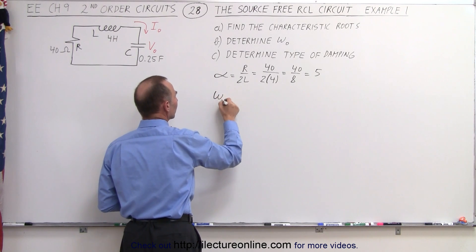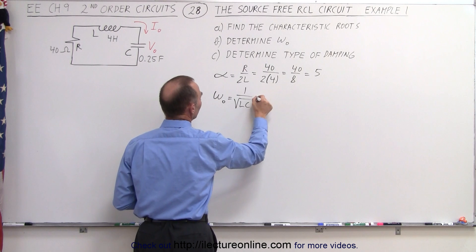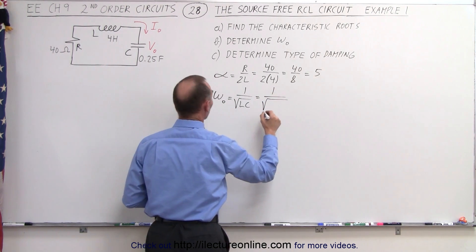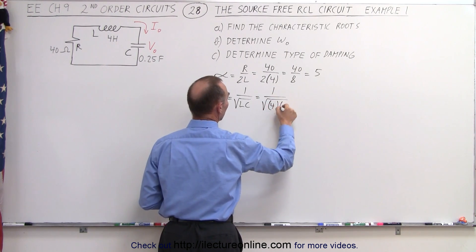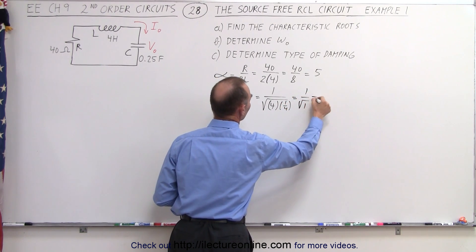The natural frequency is equal to 1 over the square root of L times C, which is equal to 1 over the square root of 4 times a quarter, which of course is equal to 1 over the square root of 1, which is simply equal to 1.